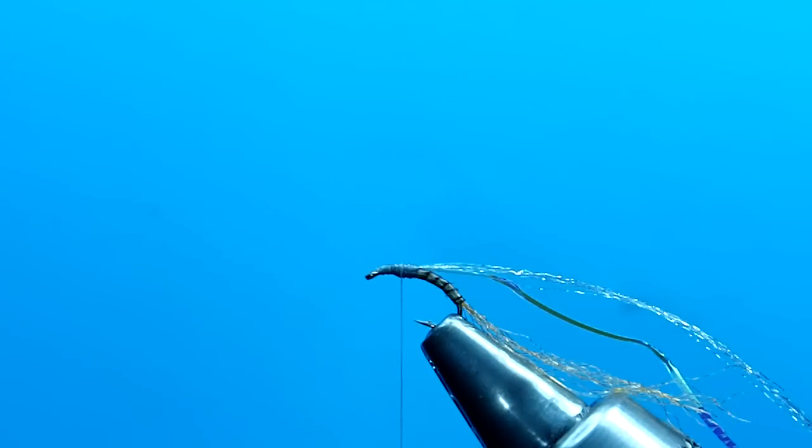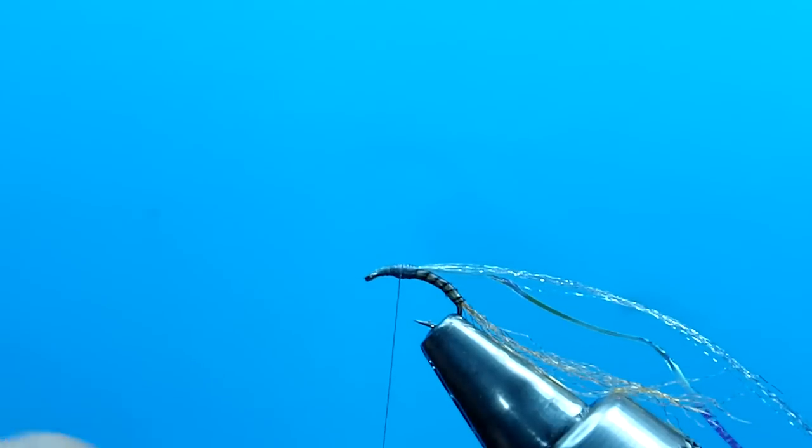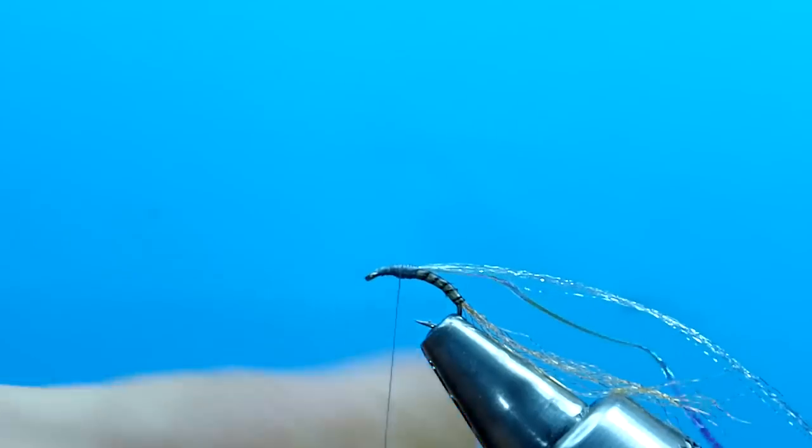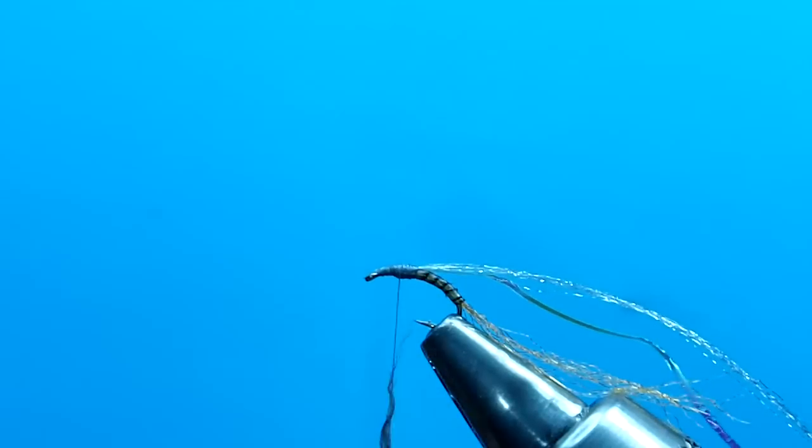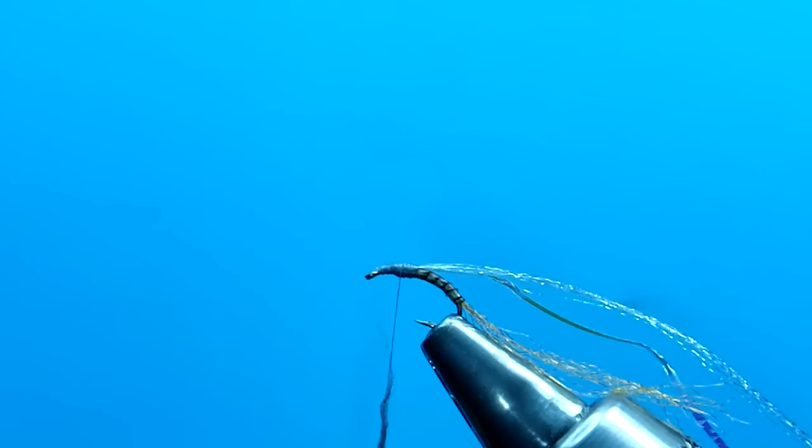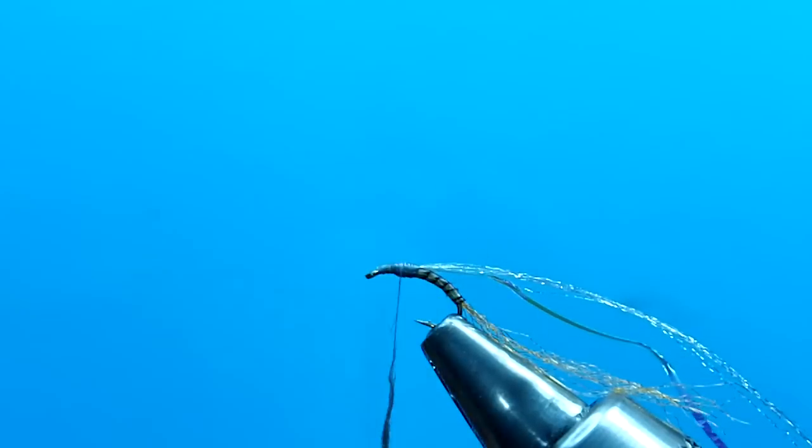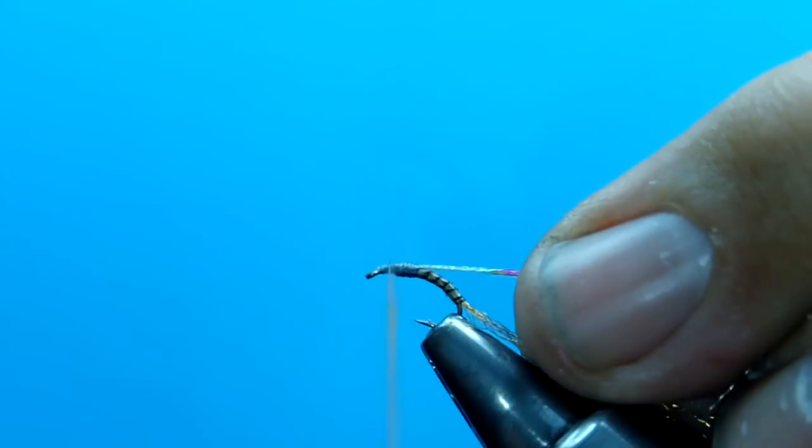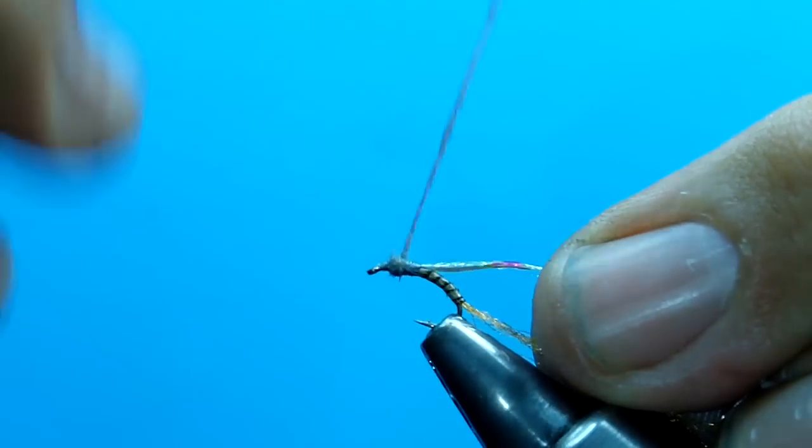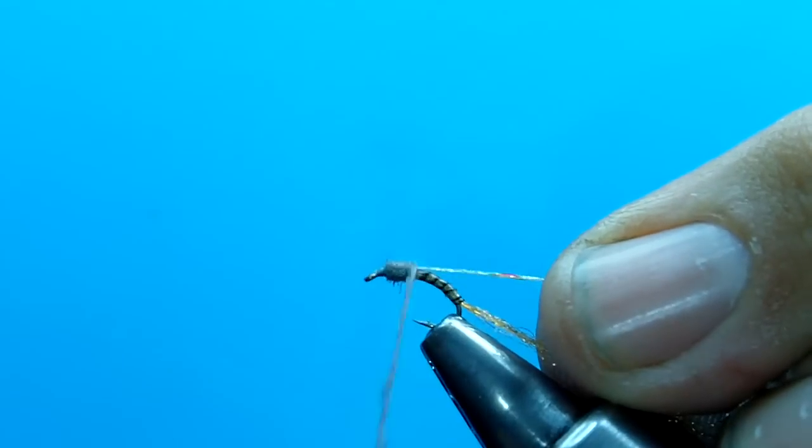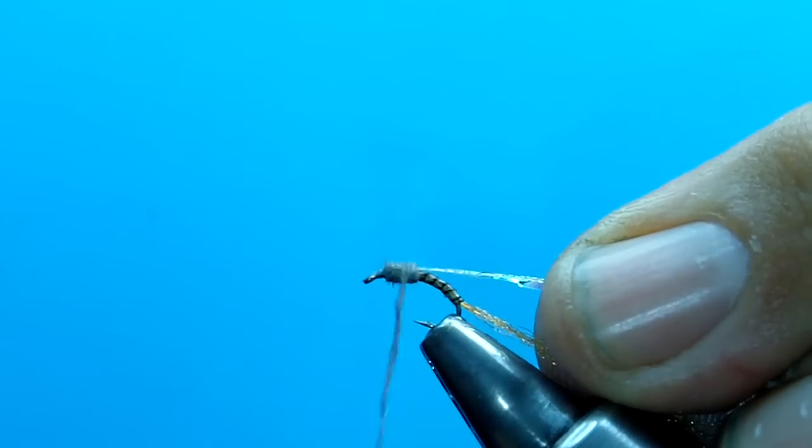Now we're going to grab our dubbing. And on this pattern I really like the muskrat. We're going to dub a little bit on here. Now we're going to dub up the thorax. I like to have a pretty predominant little thorax on this fly. There we go, got it back.